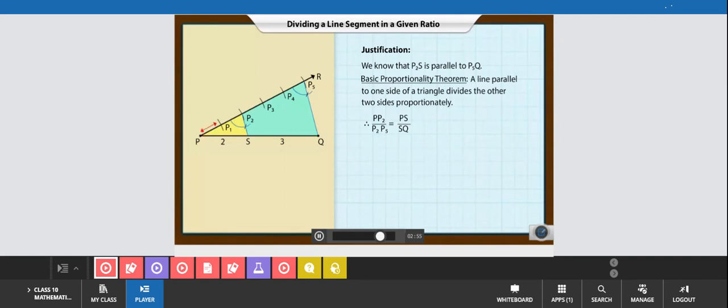We know that PP1, P1P2, P2P3, P3P4, and P4P5 are all equal in length. So, the ratio of the lengths of segments PP2 to P2P5 is 2 is to 3. Therefore, the ratio of the lengths of segments PS to SQ is also 2 is to 3.